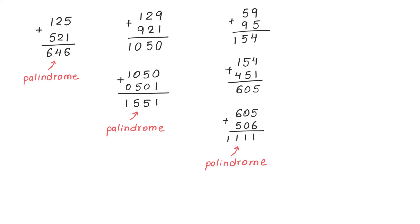So as you see in the first example, we got a palindrome after the first step. In the second example, we had to repeat the process twice. And in the third example, we had to repeat the same steps three times.